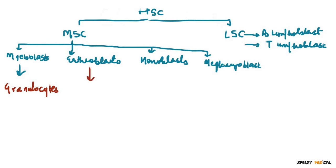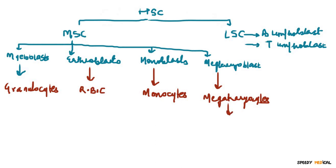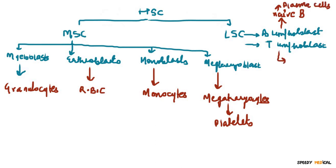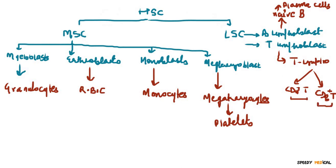The erythroblast gives rise to the mature cells called erythrocytes or red blood cells. The monoblast gives rise to monocytes, and the megakaryoblast gives rise to megakaryocytes, from which platelets ultimately arise. From the lymphoid stem cells, the B lymphoblast produces naive B cells which give rise to plasma cells, and the T lymphoblast produces mature T lymphocytes — both CD4 positive and CD8 positive.